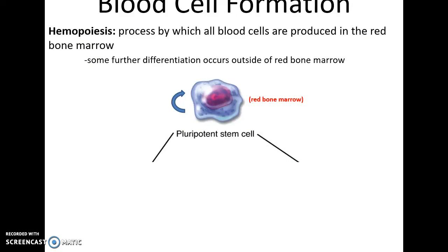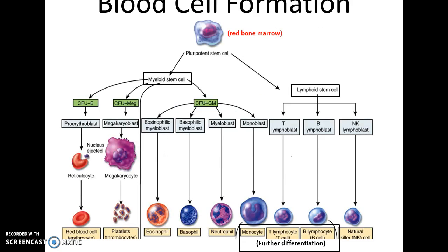Hemopoiesis is the generation of all blood cells, and all blood cells are produced in the red bone marrow, although some blood cells also differentiate in other places outside of the red bone marrow. The pluripotent stem cells are the stem cells in the red bone marrow that both reproduce themselves and are the origin of all blood cells. They can differentiate either into myeloid stem cells — which can become erythrocytes, thrombocytes, or many of the leukocytes — or into lymphoid stem cells that become the lymphocytes.